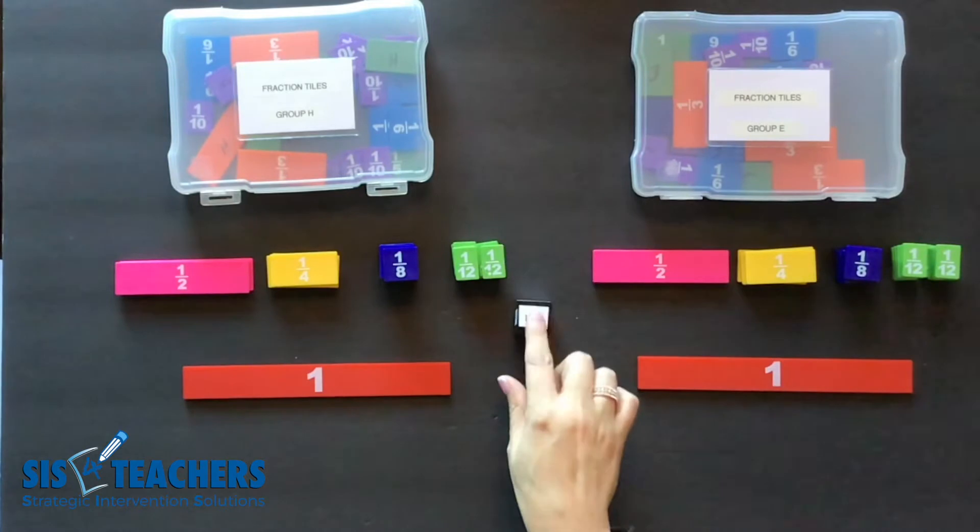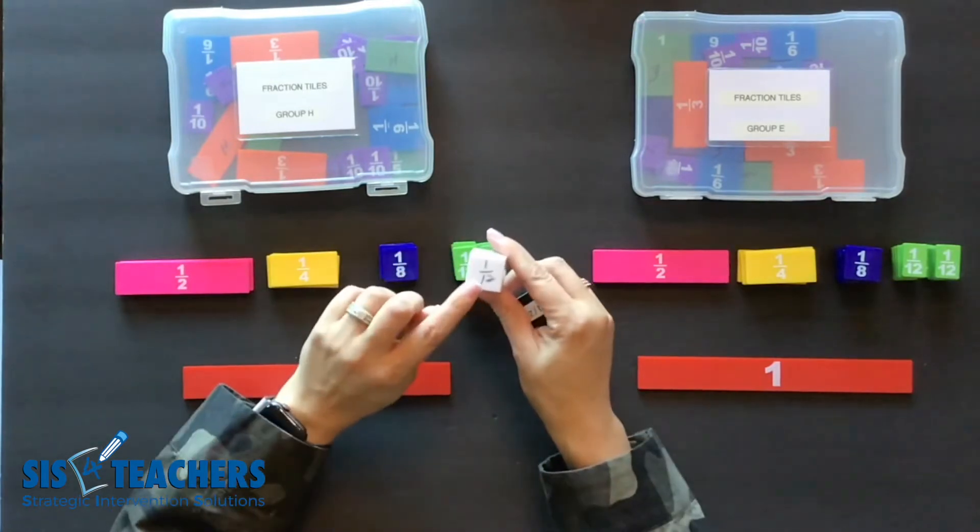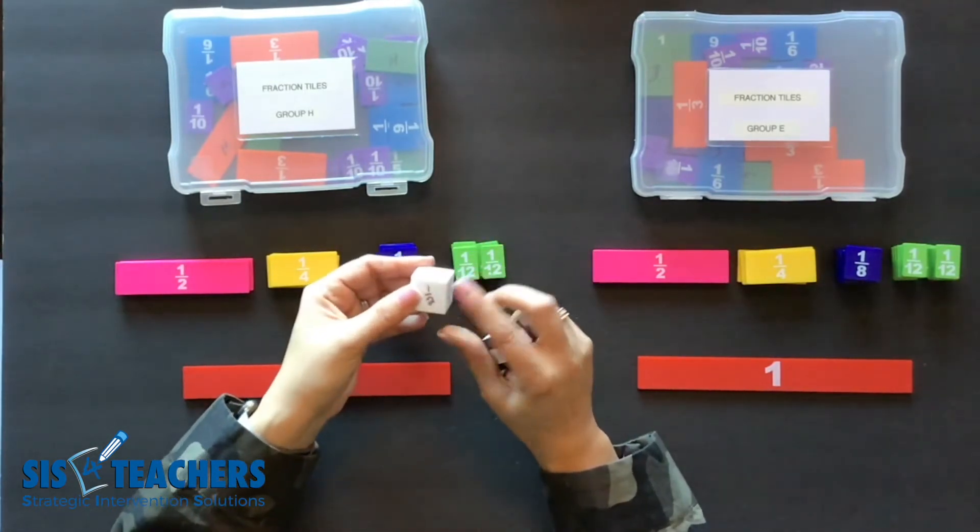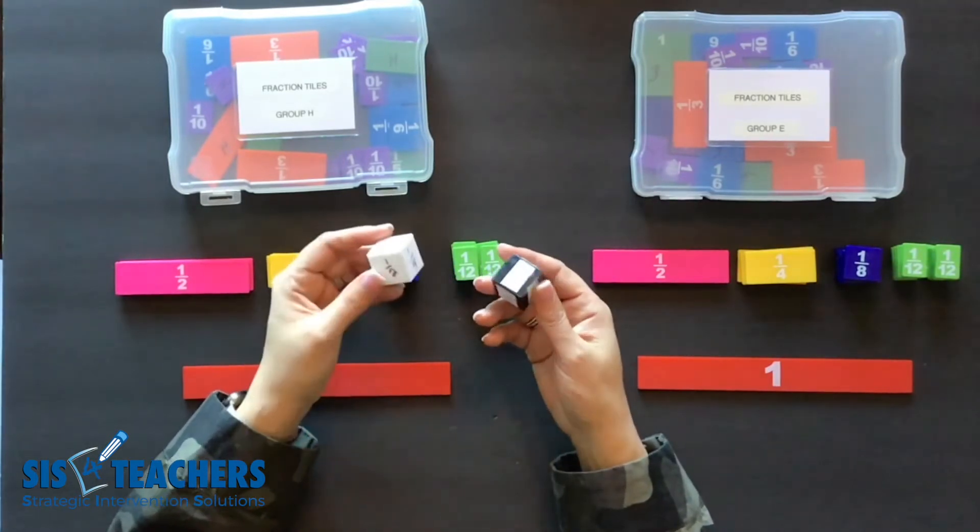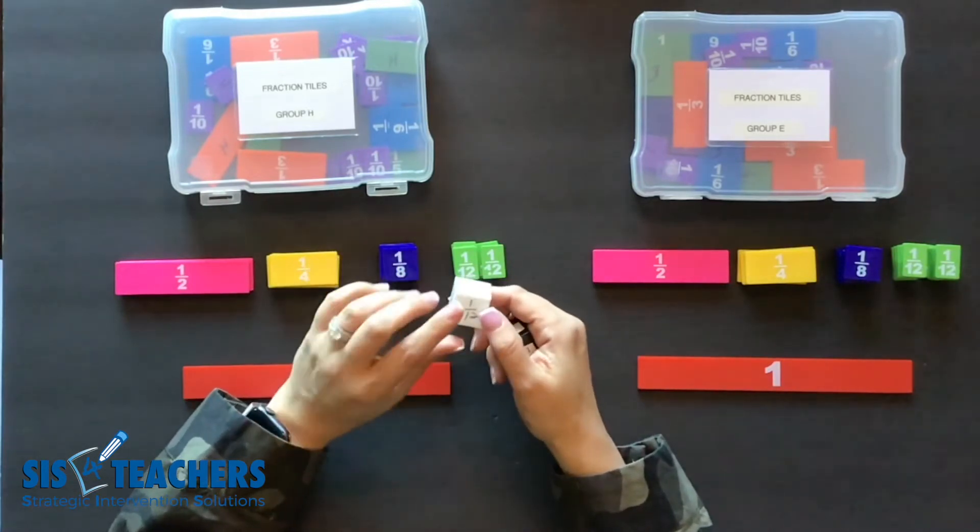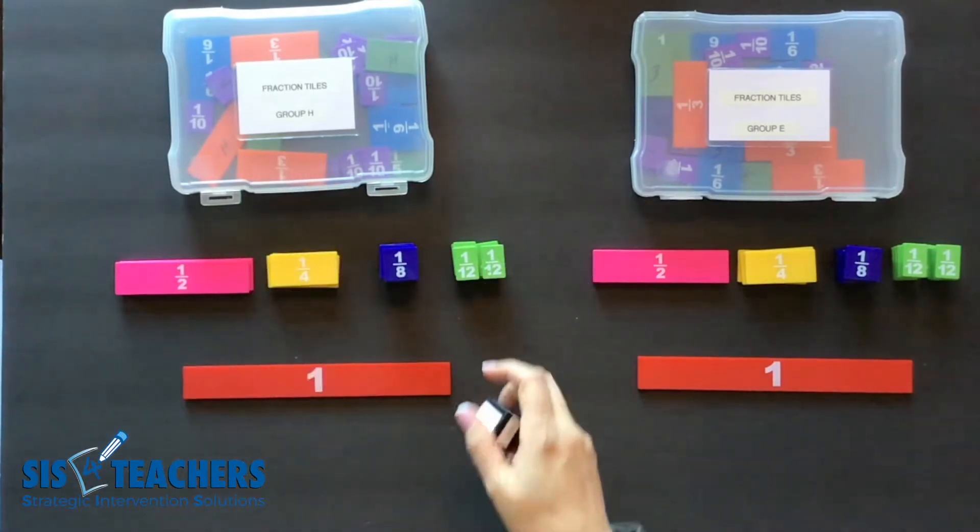You can also change the dice. I prefer to use a cube either by putting a label on it or you could even take a Sharpie marker and write the fractions that you're wanting. A lot of times these could be reusable or you could switch them out. I find making your own fraction cube is a lot easier than trying to buy pre-made fractions dice as they oftentimes are not in the denominations of what I'm looking for.